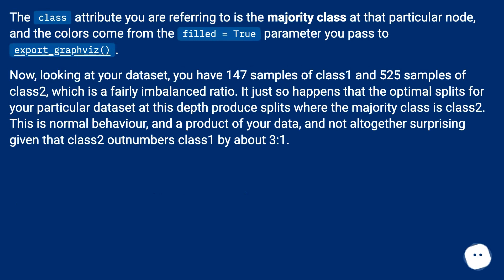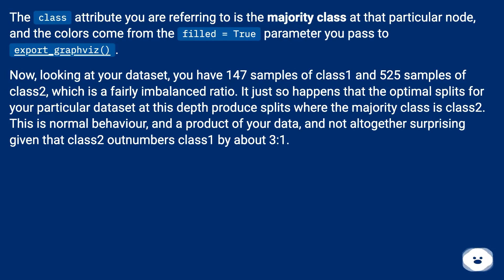The class attribute you are referring to is the majority class at that particular node, and the colors come from the filled equals true parameter you pass to export_graphviz. Looking at your dataset, you have 147 samples of class 1 and 525 samples of class 2, which is a fairly imbalanced ratio.